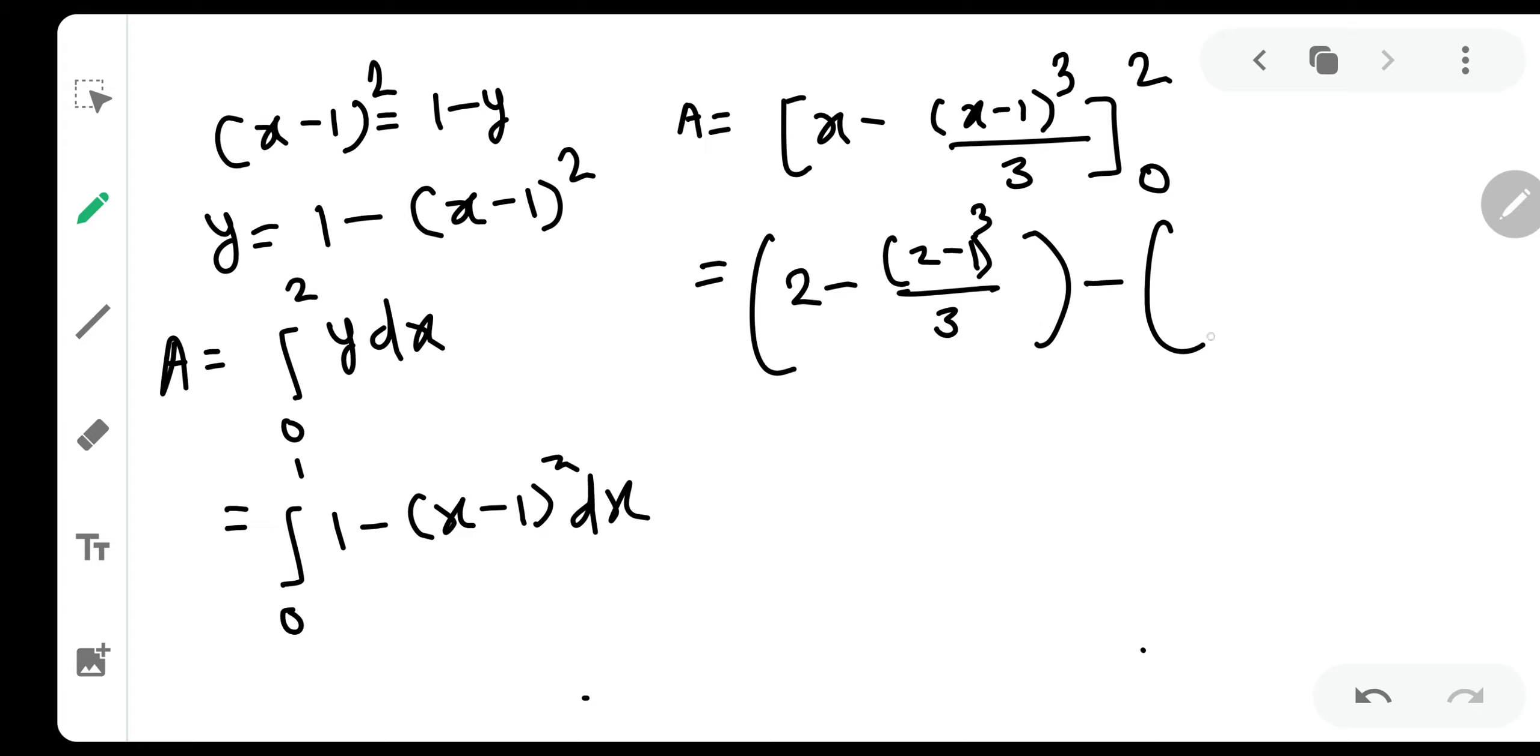Do not be in a hurry at this last position. Because people generally tend to make mistakes over here. So this will be 2 minus 1 by 3. Because 2 minus 1 is 1. And this will be minus 1 cube is minus 1. And it will be plus 1 by 3. Because there are 2 minuses. So basically this reduces to 2 minus 2 by 3.